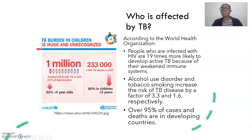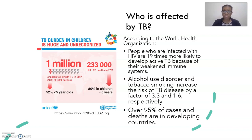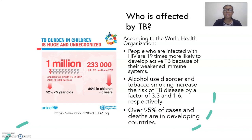According to the World Health Organization, people who are infected with HIV are 19 times more likely to develop active TB because of their weakened immune systems. Alcohol use disorder and tobacco smoking increase the risk of TB disease by a factor of 3.3 and 1.6 respectively. Over 95% of cases and deaths are in developing countries. One million children fell ill with TB in 2017, and there were 233,000 child TB deaths in 2017 alone.